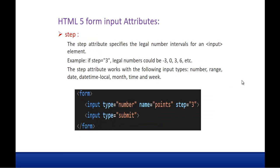Coming to step. The step attribute specifies the legal number intervals for an input element. For example, if step equals 3, the legal numbers could be -3, 0, 3, 6, etc. The step attribute works with the following input types: Number, Range, Date, Time, Local, Month, Time, and Week.